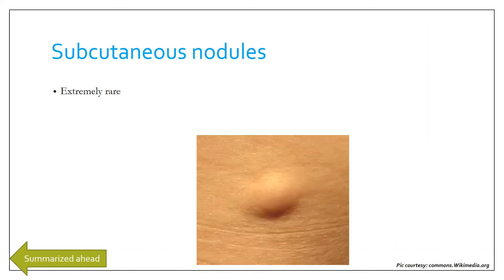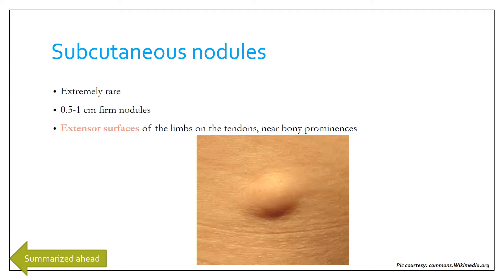Subcutaneous nodules are even more rare, seen in less than or equal to 1% of cases of acute rheumatic fever. They are 0.5 to 1 cm in size and firm, seen majorly on the extensor surfaces of the limbs on the tendons near bony prominences. They correlate with significant established rheumatic heart disease.